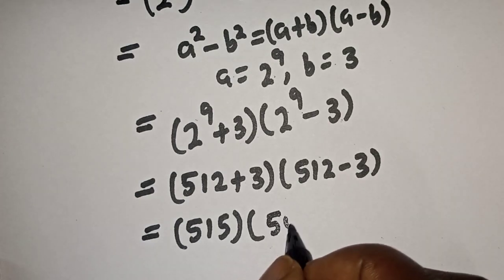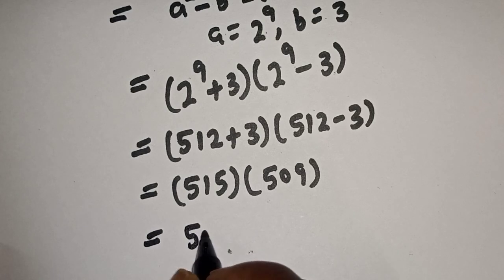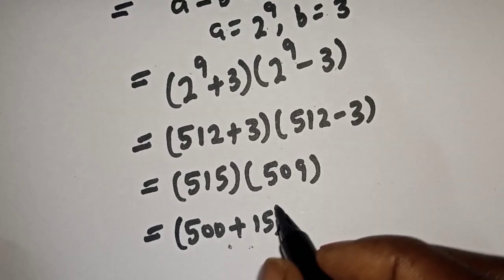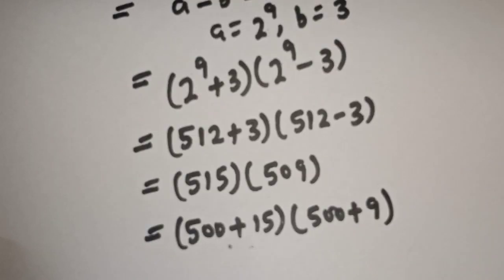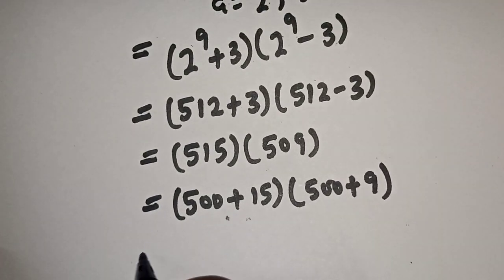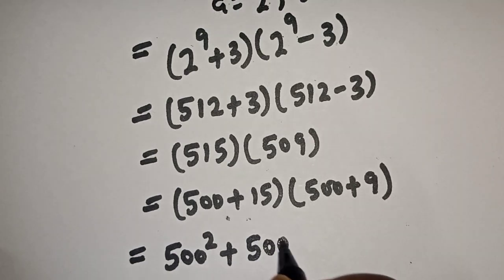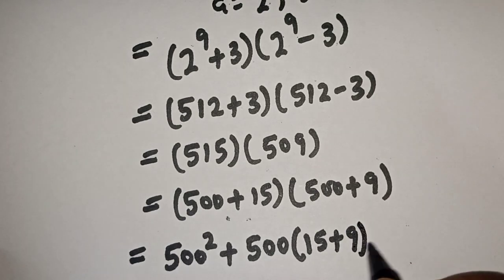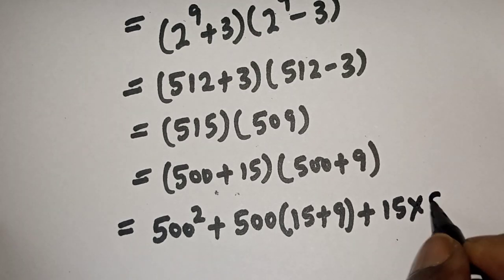Now this can be written as 500 plus 15 bracket 500 plus 9. Then let's multiply out. This is equal to 500 square plus 500 bracket 15 plus 9 plus 15 multiplied by 9.